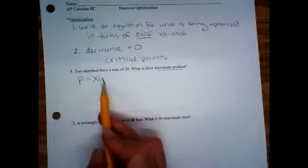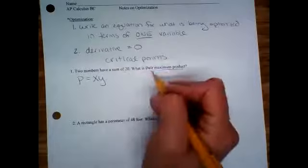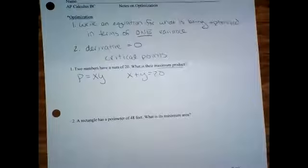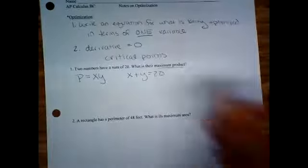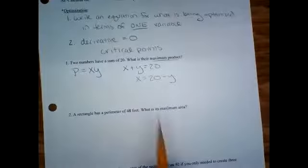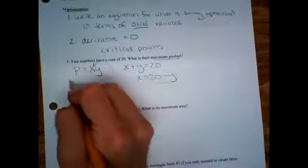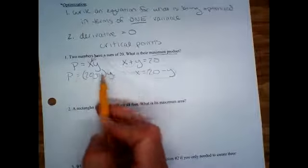Now the problem is that's two variables, X and Y. So we're going to use this other piece of information. They have a sum of 20. What does that mean we're doing with them? Adding, good. So X plus Y equals 20. You're going to solve for one or the other. It doesn't matter which one. Get X by itself. You're going to subtract over the Y. So you have X equals 20 minus Y, and you're going to substitute that in for X. So that is going to give you product equals 20 minus Y times Y.